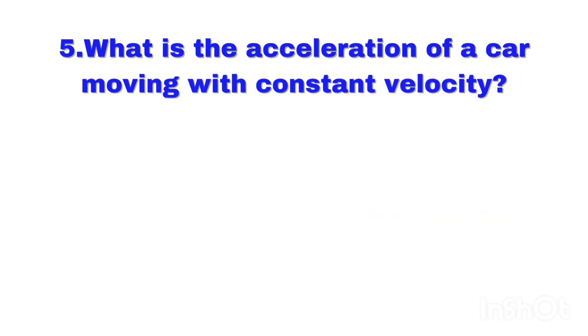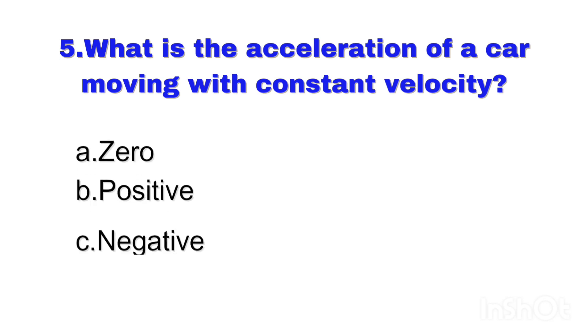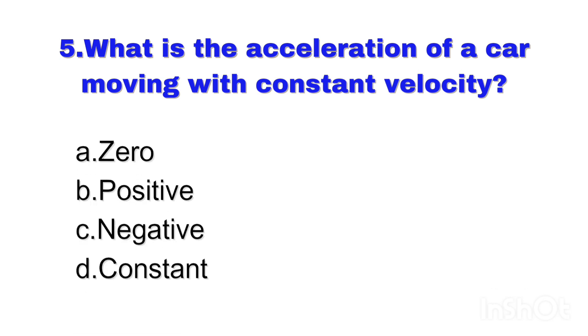Question number 5. What is the acceleration of a car moving with constant velocity? Right answer: Option E — Zero.